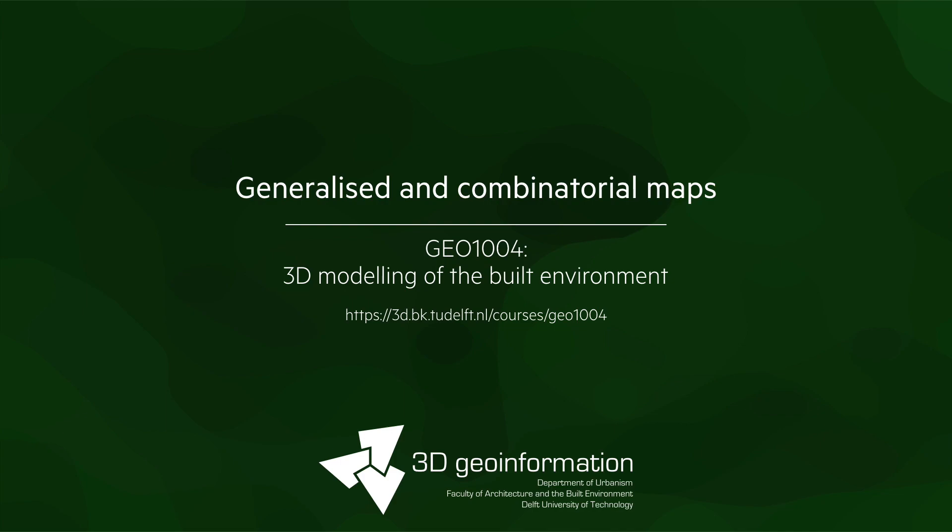The topic of this lesson is two related data structures, generalized maps and combinatorial maps. These are rather special because they can be used to represent data of any dimension, including in 2D and in 3D.